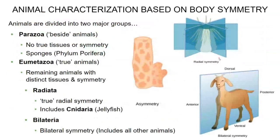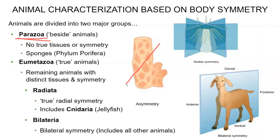Let's talk about bilateria. The parazoa — different from protozoa — are animal adjacent. These are your sea sponges. They have no true symmetry. They do have different cell types, but no true tissues — all the cell types are just kind of mixed in. There's no perfect line that I could cut to get an exact mirror image, so these are called parazoa, or asymmetrical. Our main example of this are sea sponges.